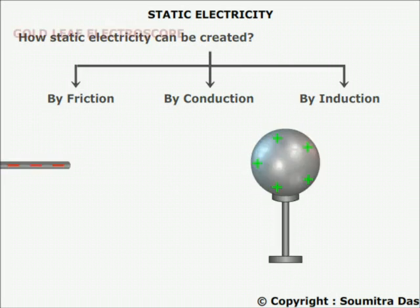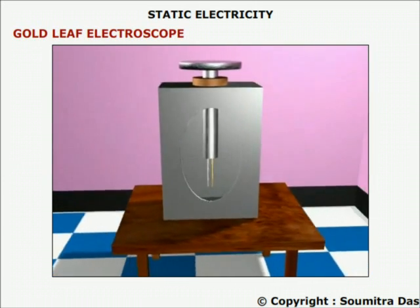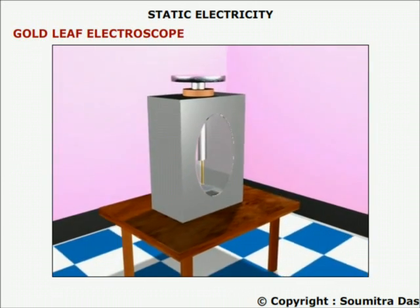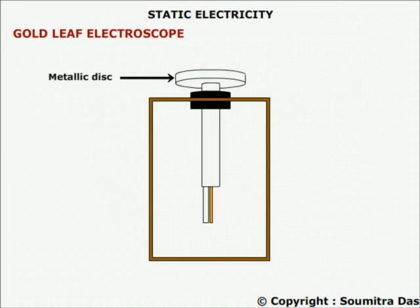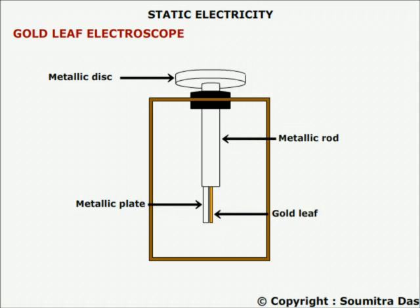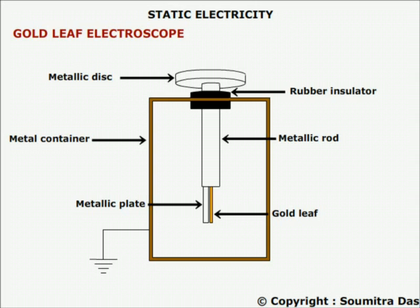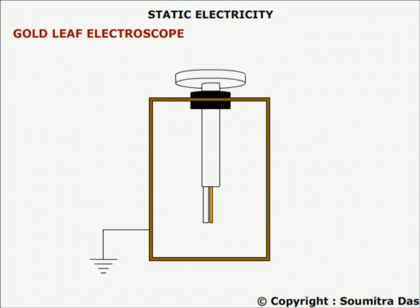Gold leaf electroscope is an instrument to detect static electricity. It consists of a metallic disc connected to a metallic plate by means of a metallic rod. A thin gold leaf is fixed to the metal plate. The whole thing is covered by a metal container which is insulated from the metallic rod by means of a rubber insulator. This metal container is earthed to remove any induced charge, and the metallic disc is outside the container.